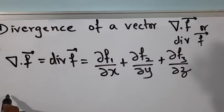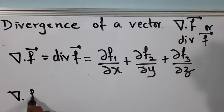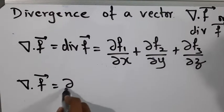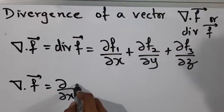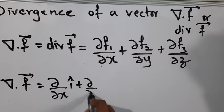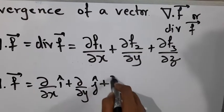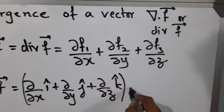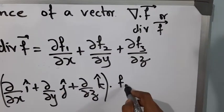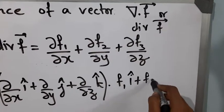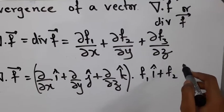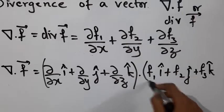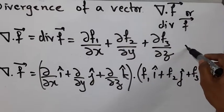If we look at the definition of del, assuming that del is similar to a vector, we have: dou by dou x i cap plus dou by dou y j cap plus dou by dou z k cap, dot vector f, where vector f is f1 i cap plus f2 j cap plus f3 k cap. This is the definition of divergence.